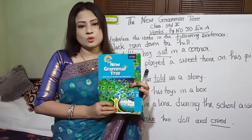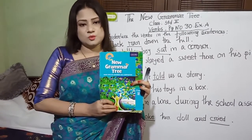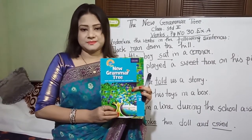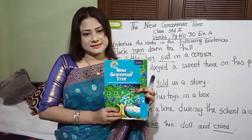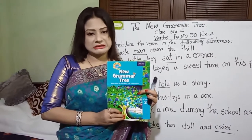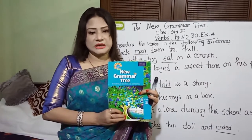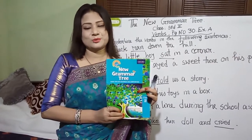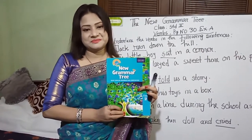A doing word is called a Bhar. For example: to sleep, to eat, to ride, to drink, to laugh, etc.